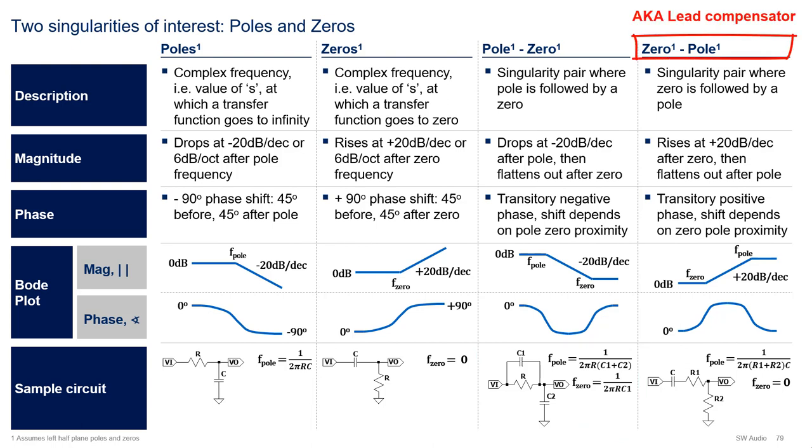A zero pole is a singularity pair where a zero is followed by a pole. In this case, the magnitude rises at 20 dB per decade after the zero, and then flattens out after the pole. The phase will exhibit a transitory positive phase shift, which depends on the zero pole proximity, as shown in the sample Bode plot. The sample circuit is the RC high-pass filter with extra resistor R1. At the introduced pole frequency, R1 limits the impedance of the series connection of R1 and C, and the circuit becomes a resistor divider with gain R2 over R1 plus R2.